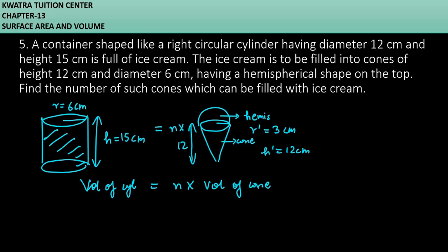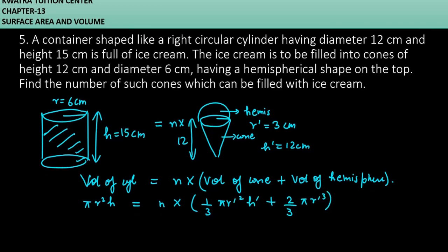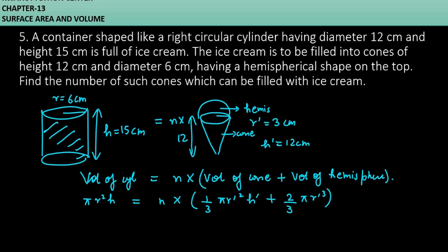It is equal to pi r square h. It is equal to 1/3 pi r dash square h plus volume of hemisphere. Volume of hemisphere is 2/3 pi r dash cube is equal to pi r square h. If you can see here, we can put values and pi will cancel out.